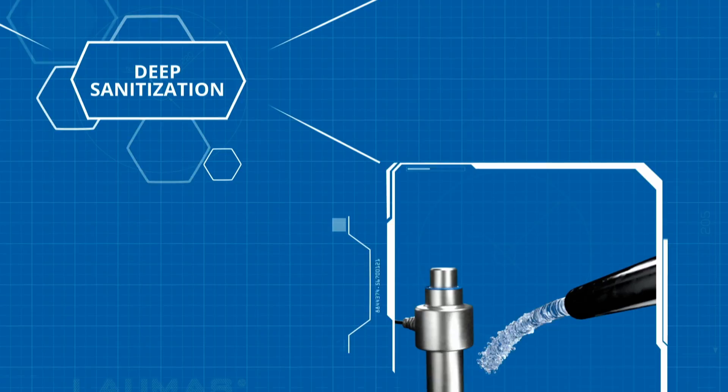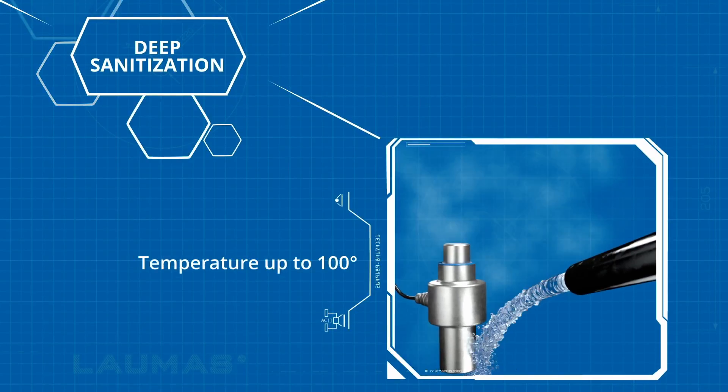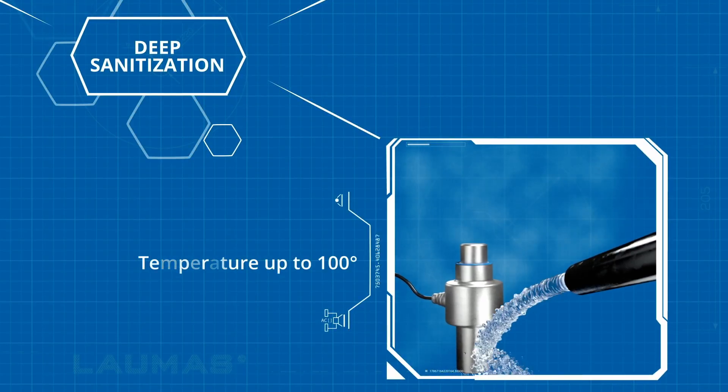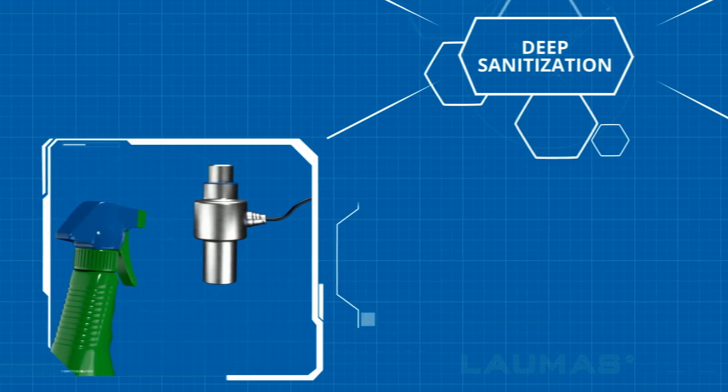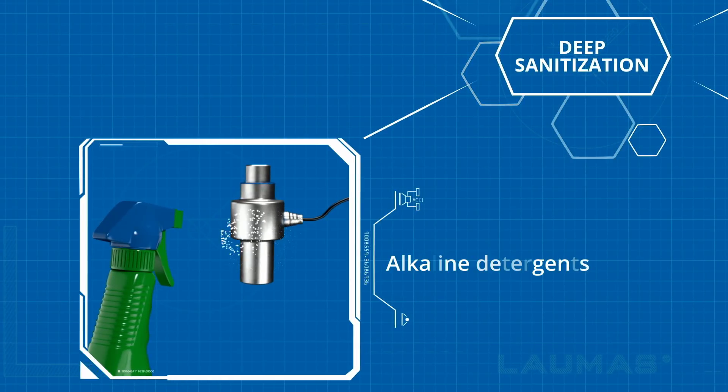Thanks to the great strength of the materials, it is possible to use jets of water at high pressure and temperature, and to use aggressive products such as alkaline detergents, sprayed at high temperature.